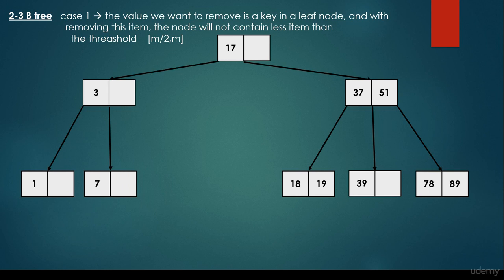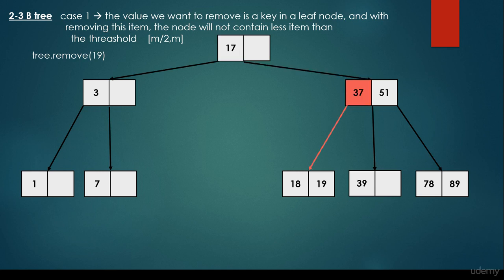We have Case 1, when the value we want to remove is a key in a leaf node and with removing this item, the node will not contain fewer items than the threshold. As we discussed in the basics video, each node can contain at least m/2 keys and at most m keys, so the number of keys must stay in this range. For example, we would like to remove 19. First we search for this item: we start at the root node, go right because it's greater than 17, it is smaller than 37, and it is greater than 18 — so we have found the item. Because this is a leaf node and removing this item is not going to violate the B3 properties, we just remove it without any problem.